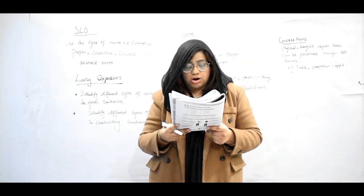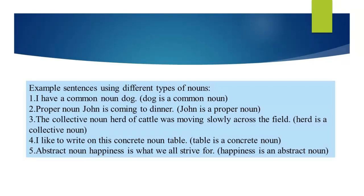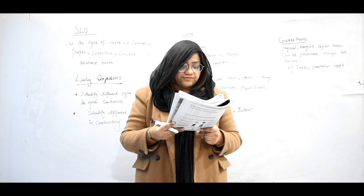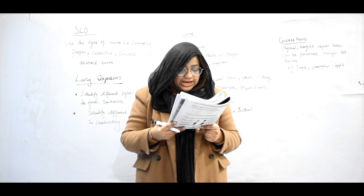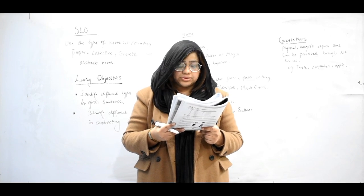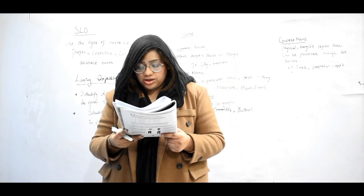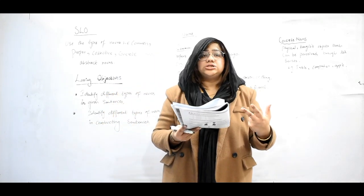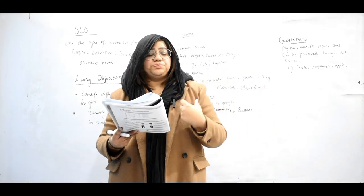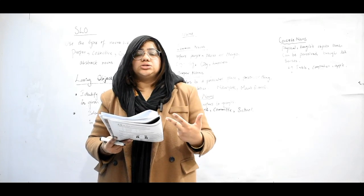Let's look at examples using different types of nouns. The common noun: dog. The proper noun: John is coming to dinner — John is the proper noun. The collective noun: a herd of cattle was moving slowly across the field — herd is the collective noun. The concrete noun: table — table is a concrete noun. The abstract noun: happiness is what we all strive for — happiness is an abstract noun that we cannot see but can experience and feel.